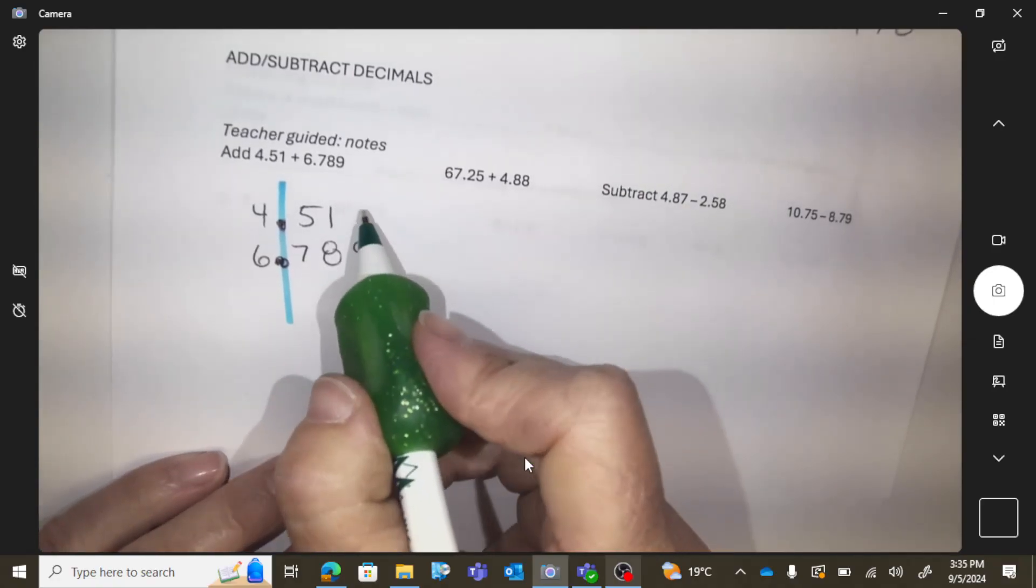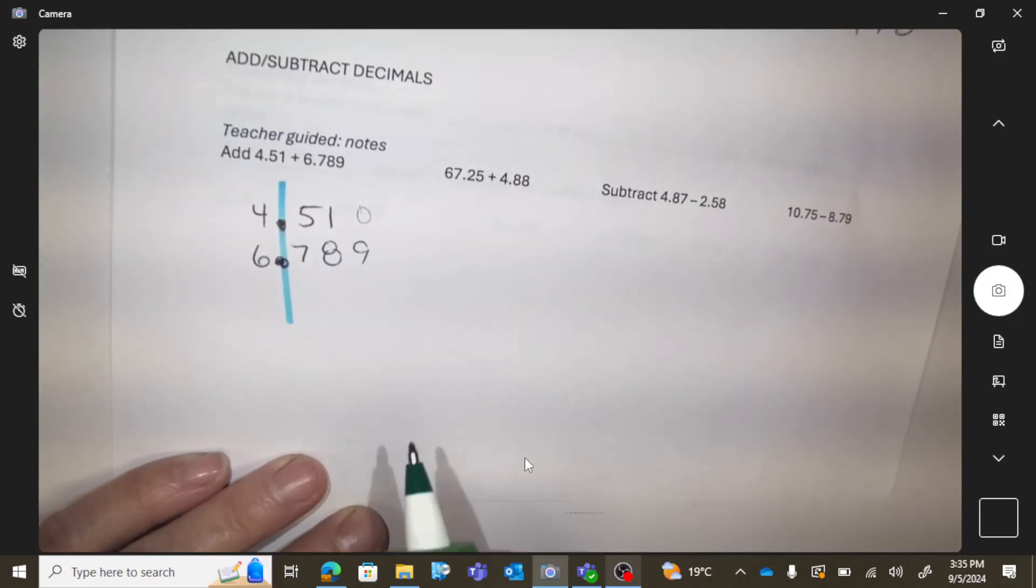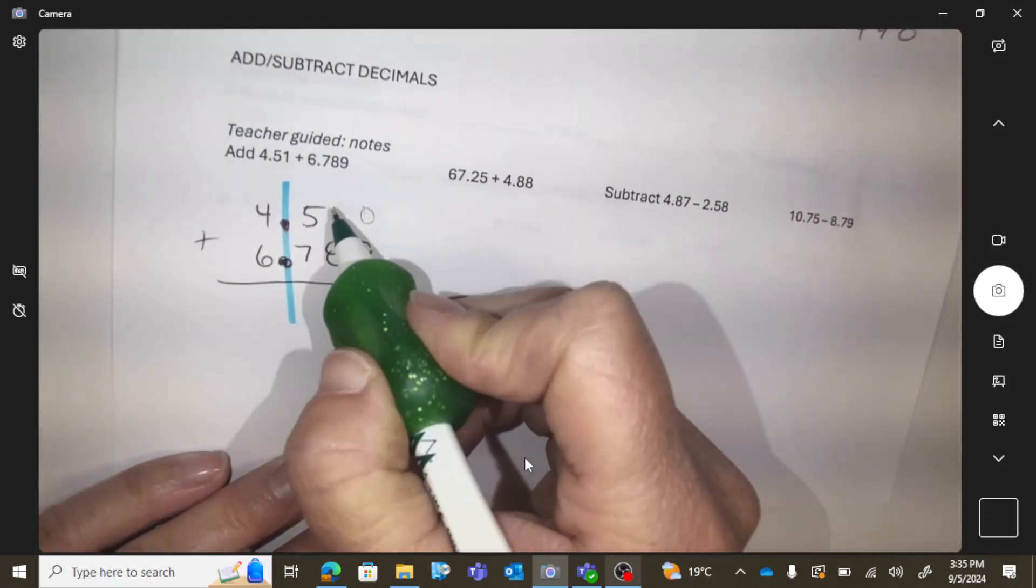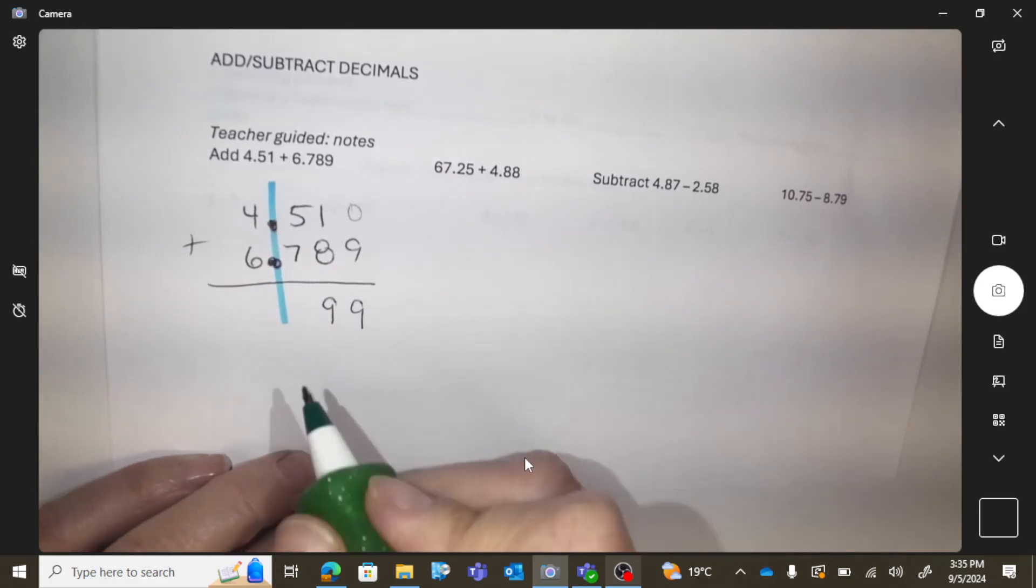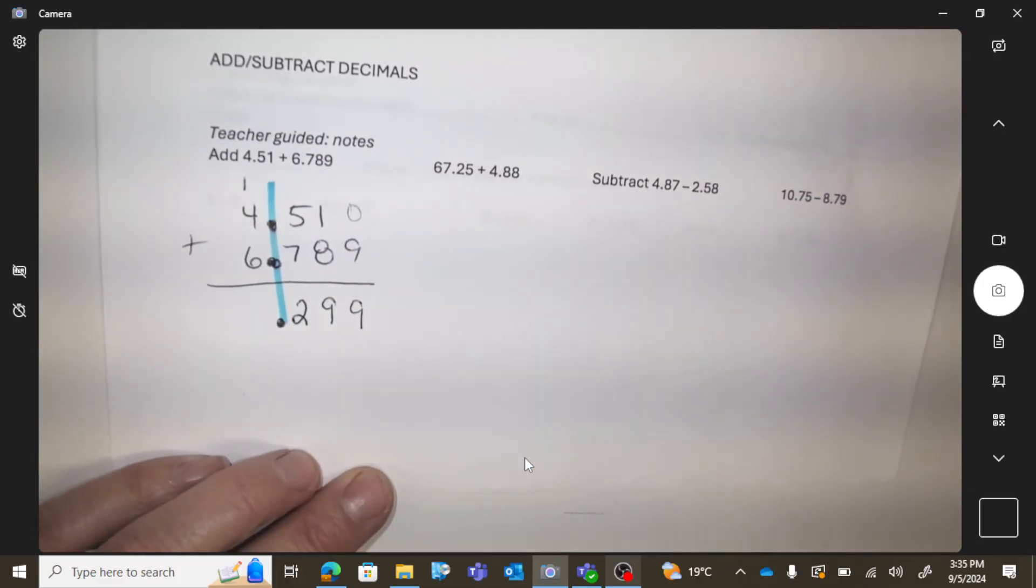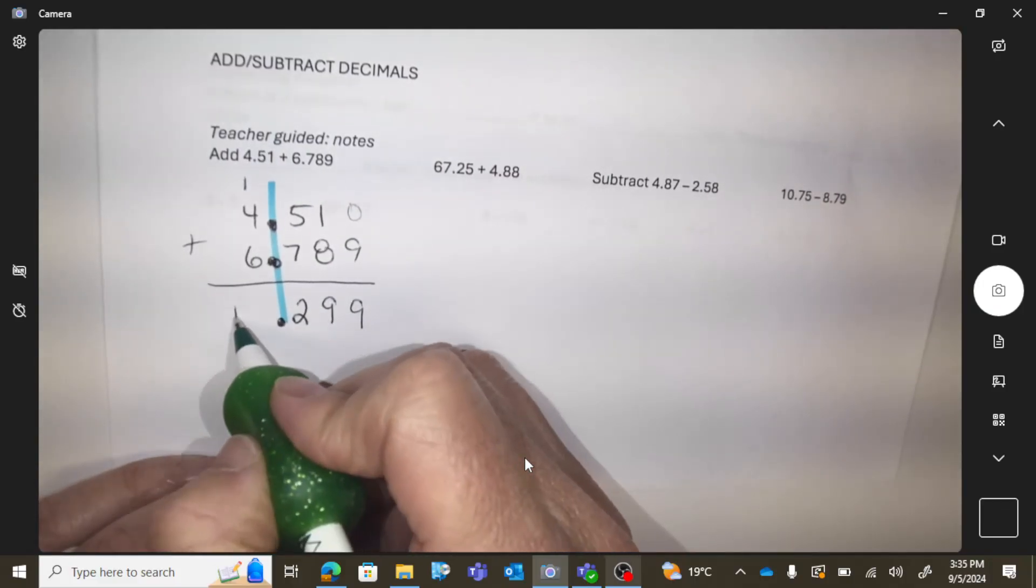Since there's nothing in this position to go with the nine, you can always put a zero there. Adding: zero plus nine is nine, one plus eight is nine, five plus seven is twelve, so that doesn't fit—you write twelve with a carry. Then four plus six plus that extra one is eleven.